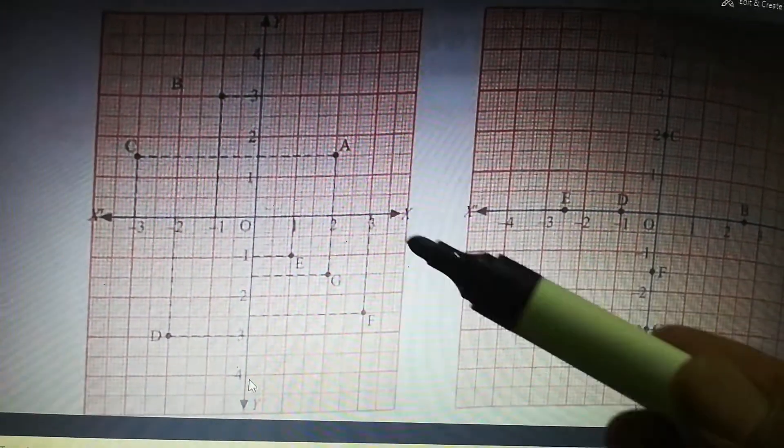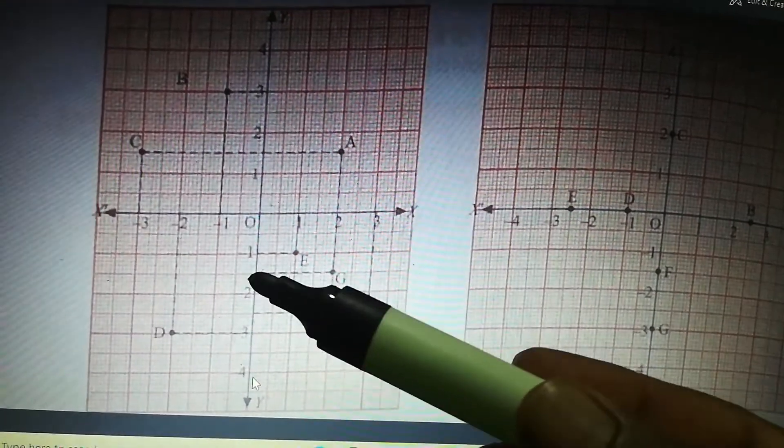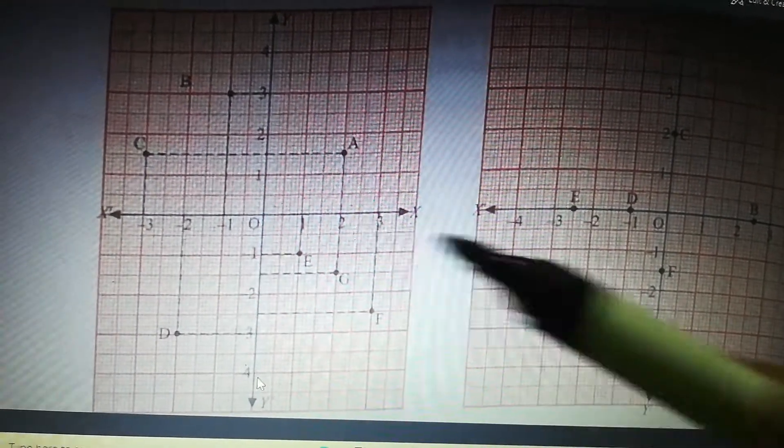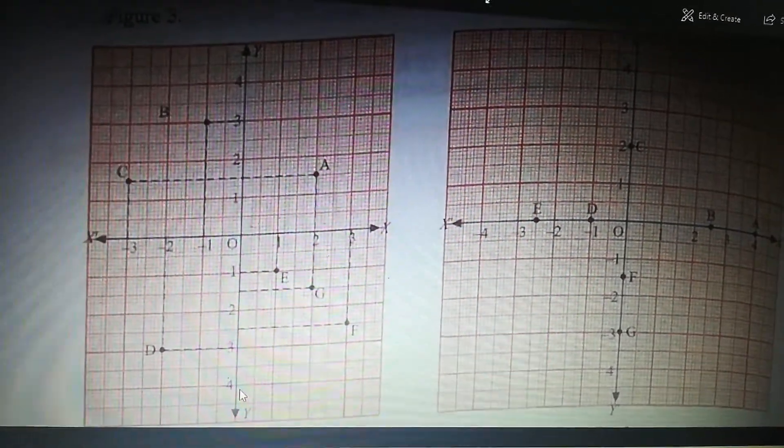And the last one, G. G is X is 2 and Y is minus 1.5. So 2 and minus 1.5.